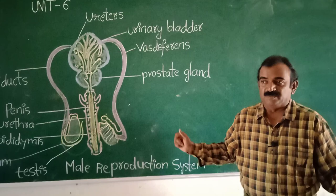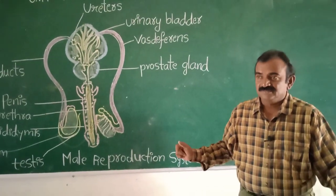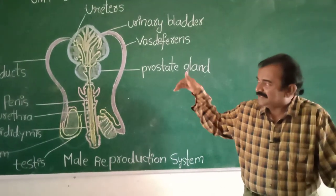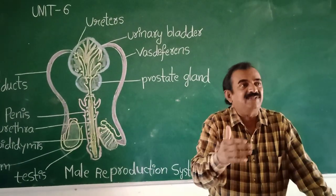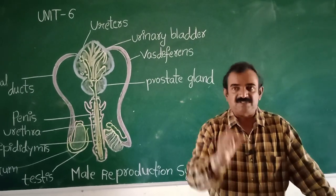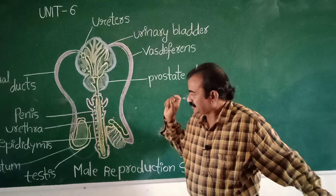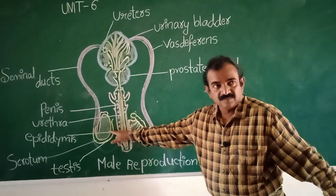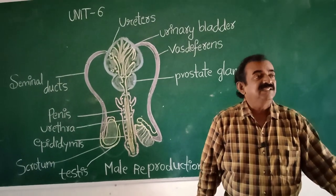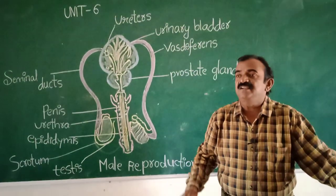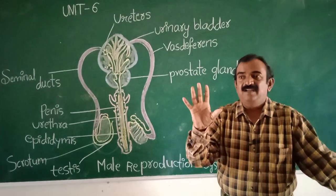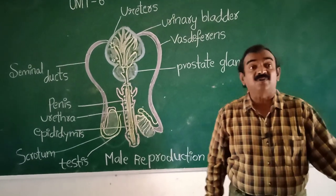Refer to diagram 13A in your textbook. This diagram shows what parts are present in the male human reproductive system. Here you see one and two — these are called testes. In males, two testes are present and these two are the reproductive organs.